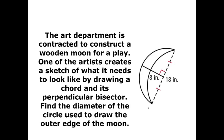In this problem, the art department has created a sketch for a moon that they would like built for a play. And so what they've done is they've drawn a chord, this 18-inch chord, and they've used a perpendicular bisector with it, this 8-inch bisector. Now, what we learned in a previous lesson is that a perpendicular bisector, which will be represented by this 8-inch piece here, will go through the center of a circle if it is the perpendicular bisector of a chord in that circle.